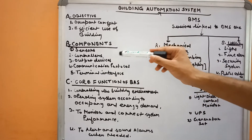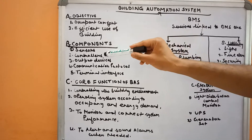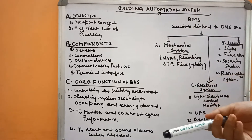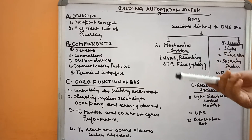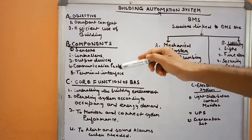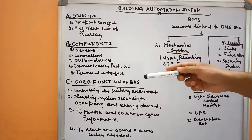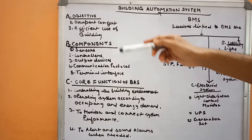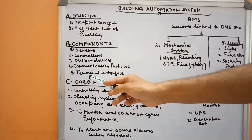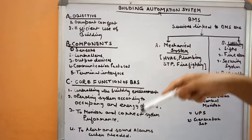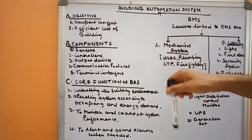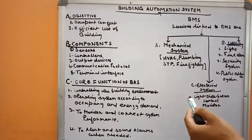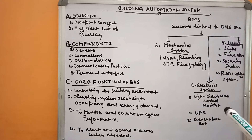Sensors include things like occupancy sensors. The controller is the brain of the system — controllers are nowadays digital, known as a Digital Direct Controller (DDC) system. Then there are output devices and communication protocol. Communication protocol is like a language for the system; in a building automation system, BACnet is commonly used. The terminal interface is where a user can manually change data or set the desirable conditions for the automation system.